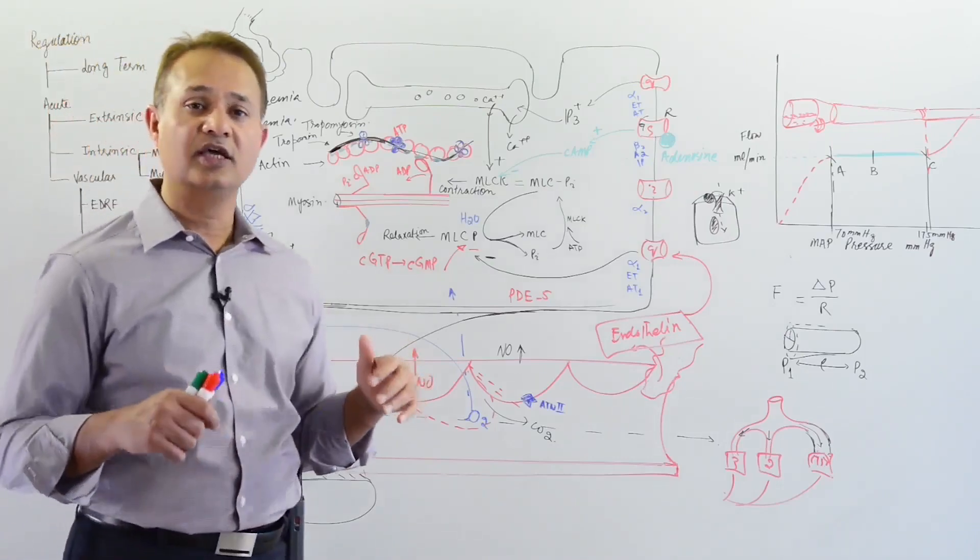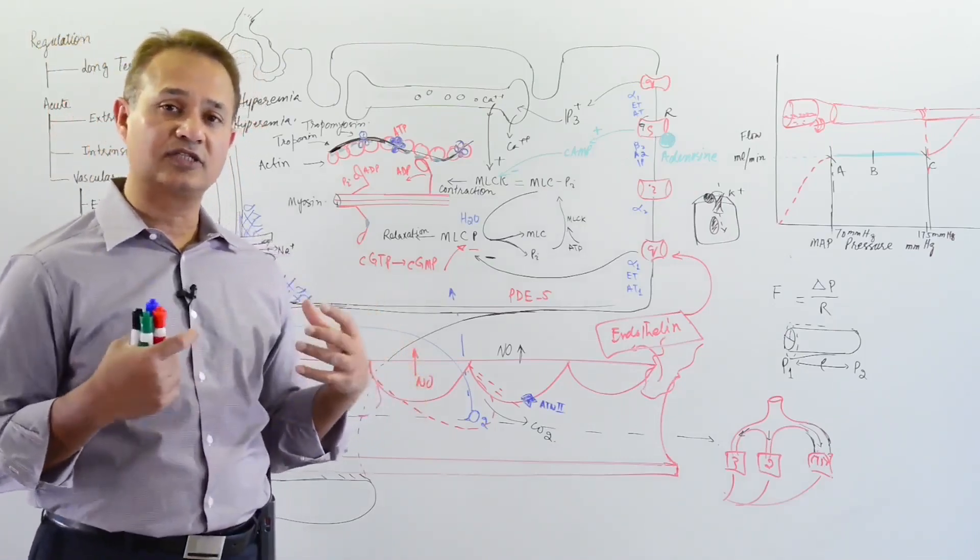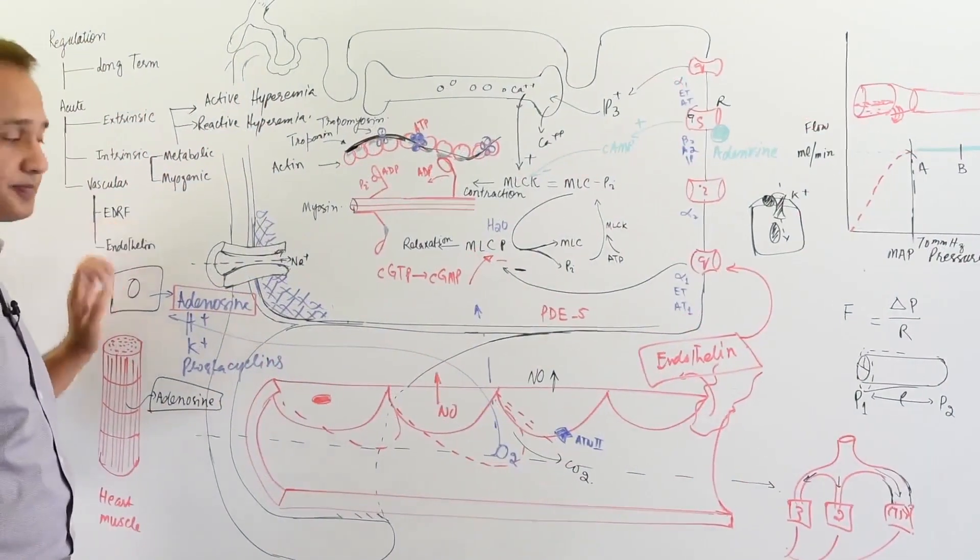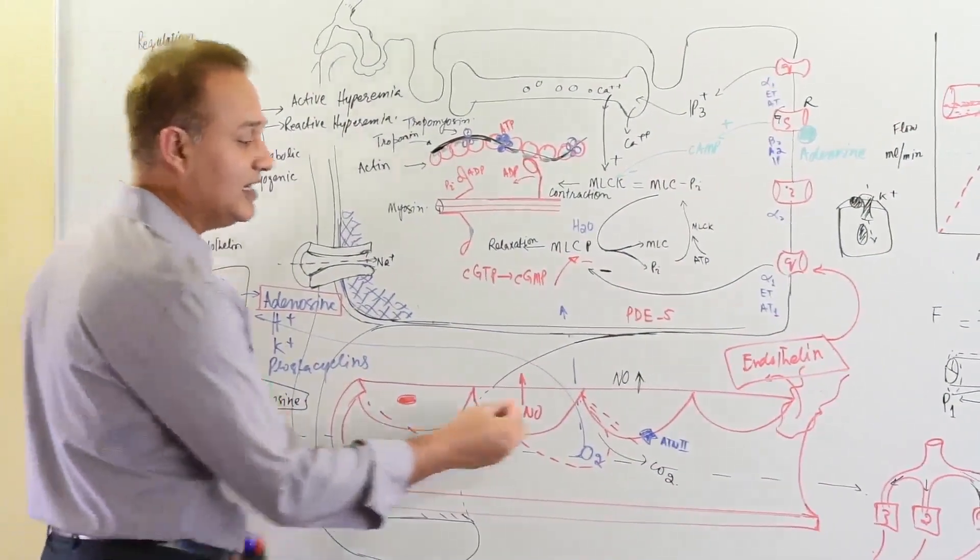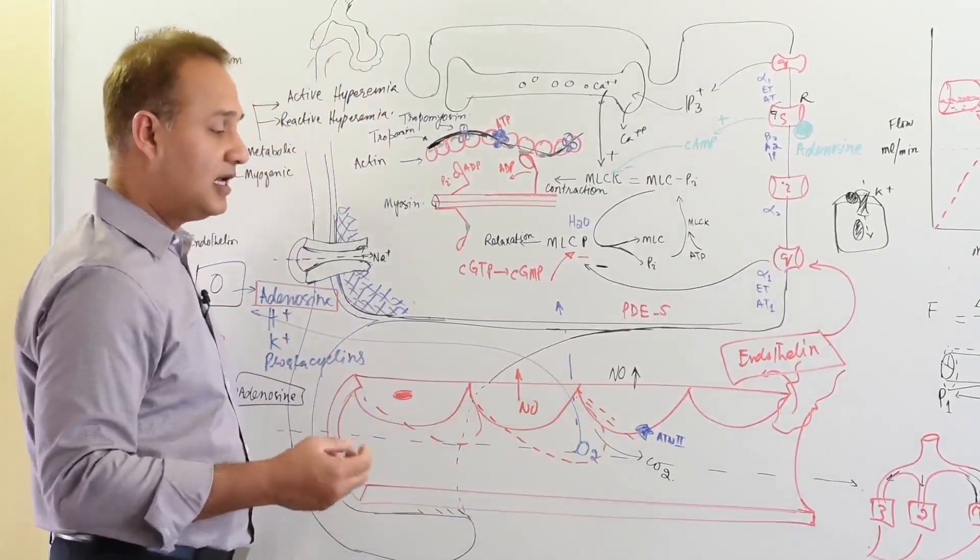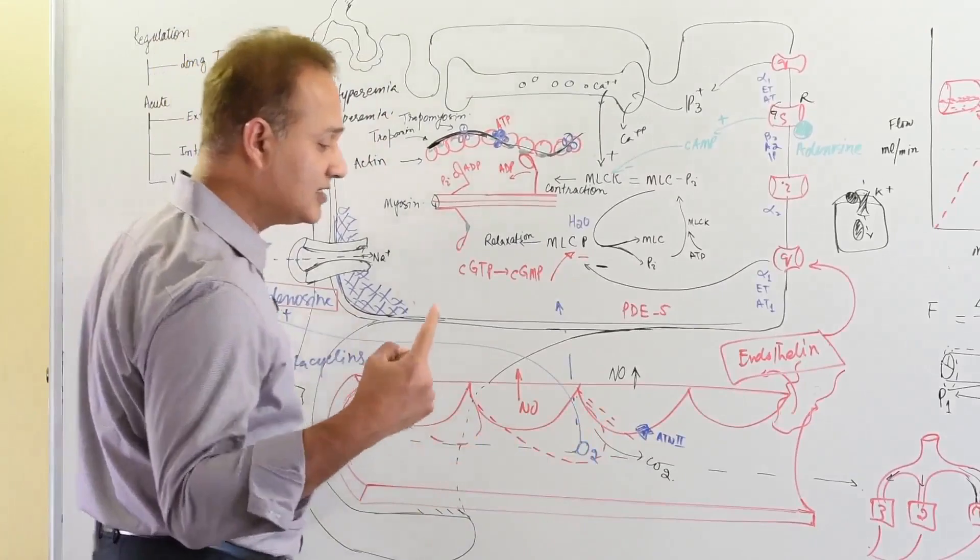Nitric oxide is called an endothelium-derived relaxing factor. This is released from the endothelium of blood vessels. When is it released?